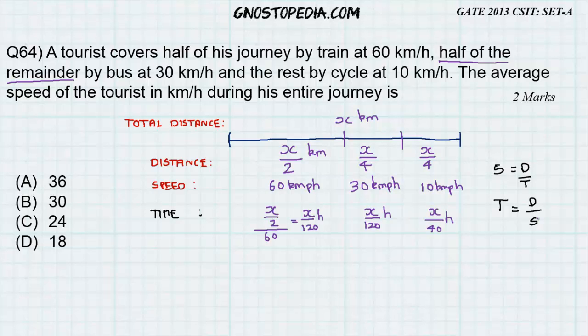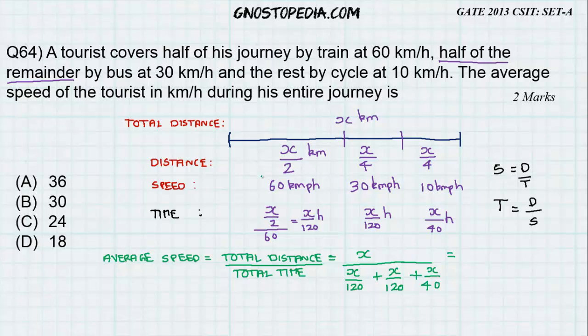The formula for average speed is total distance upon total time. The total distance is equal to x and the total time is... solving this equation, x gets cancelled and the answer we get is 24, and hence C is the correct answer.